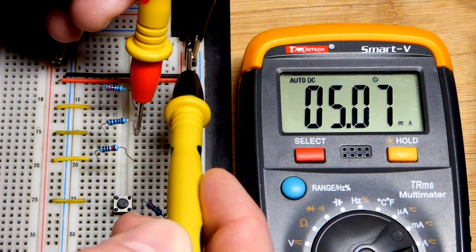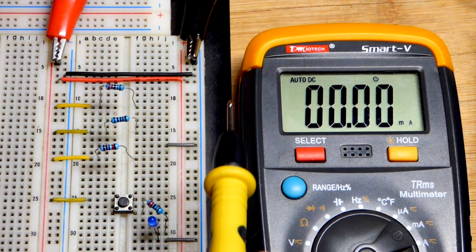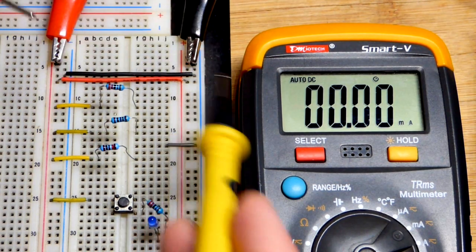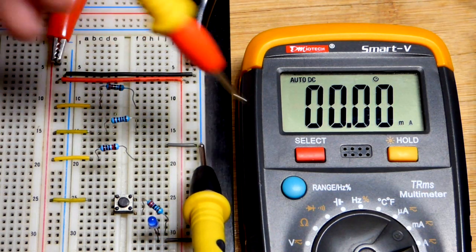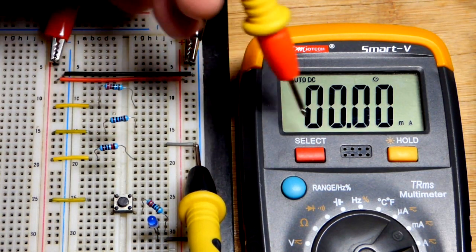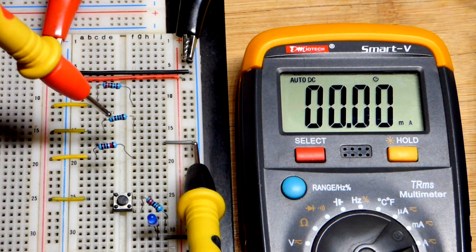There you can see we got five milliamps and so we would calculate that ahead of time. Make sure that we have a general idea how much current is going to flow through it. And then we can measure with the multimeter to verify that.